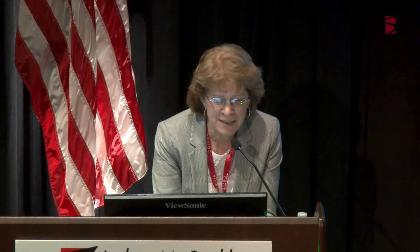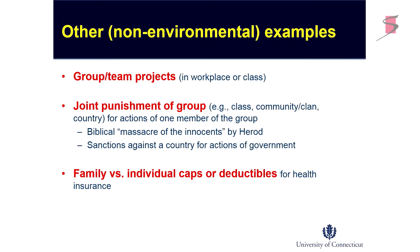Broadening the scope, this issue is not just within the environmental area — there are examples outside of environmental economics as well. We're familiar with group projects in our classes and giving a grade to the group as opposed to individuals. In the Bible, there are examples of group punishment where a community or clan is punished for an outcome based on group performance. Even in healthcare, a deductible limit could be applied at an individual level or at a family level, and that's a group incentive as well. So the question is, how do we think about these kinds of collective approaches?